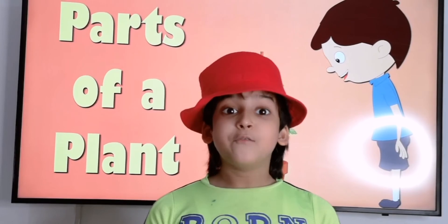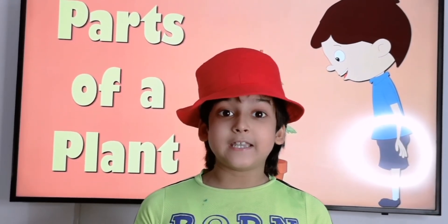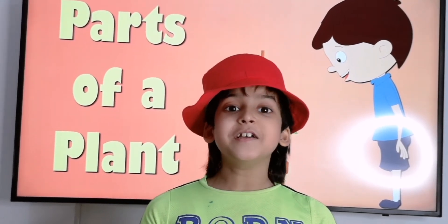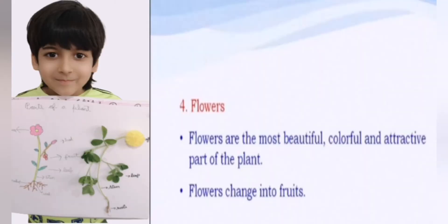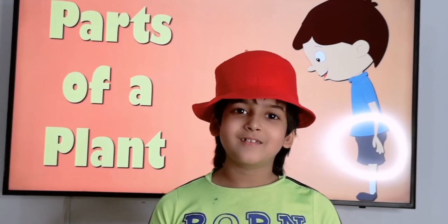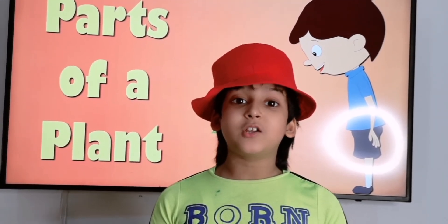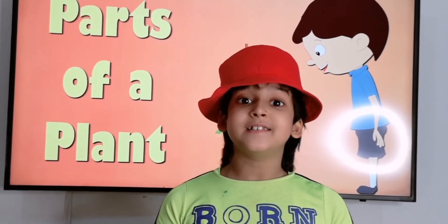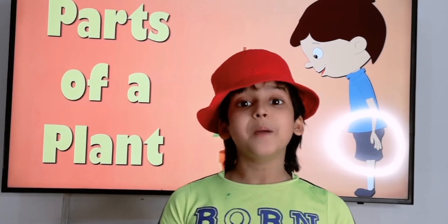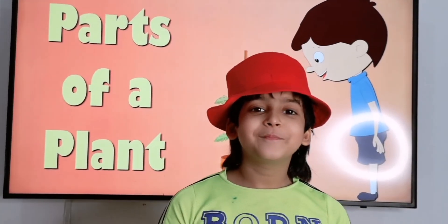Flowers — flowers are the most beautiful, colorful part of the plant. Flowers change into fruits. Fruits are also a very important part of the plant. Fruits store food and contain seeds that grow into a baby plant.